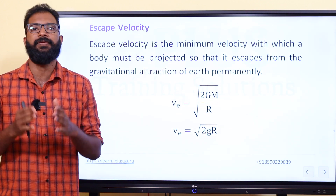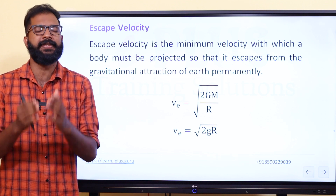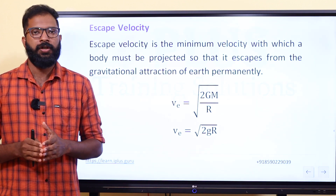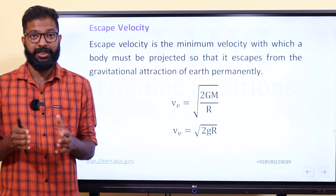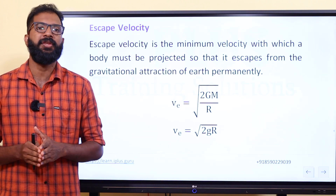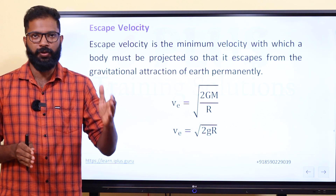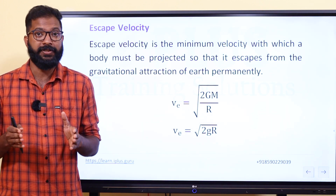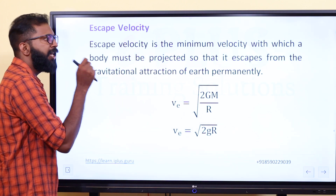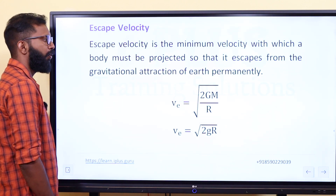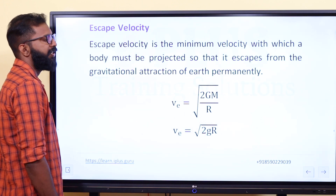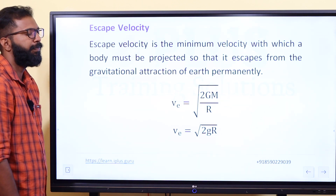Escape velocity is the minimum velocity required for an object to escape from Earth's gravitational field. More formally, it is the minimum velocity with which a body must be projected so that it will escape from the gravitational attraction of Earth permanently.